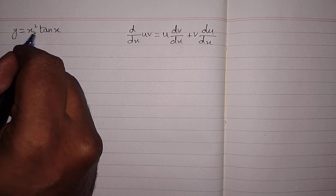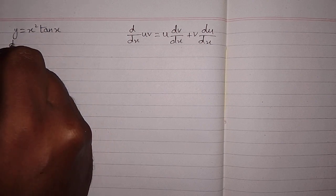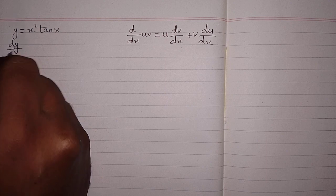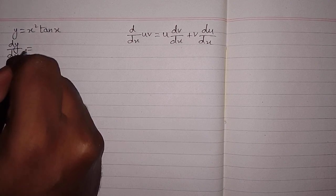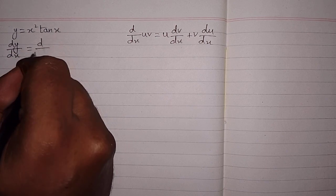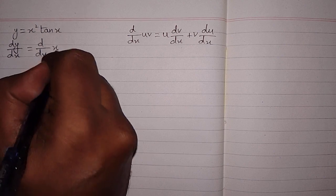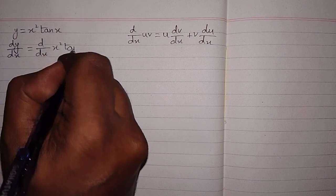Now we have y equals x squared tan x, so we can differentiate both sides with respect to x. So we have dy/dx equals d/dx of x squared tan x.